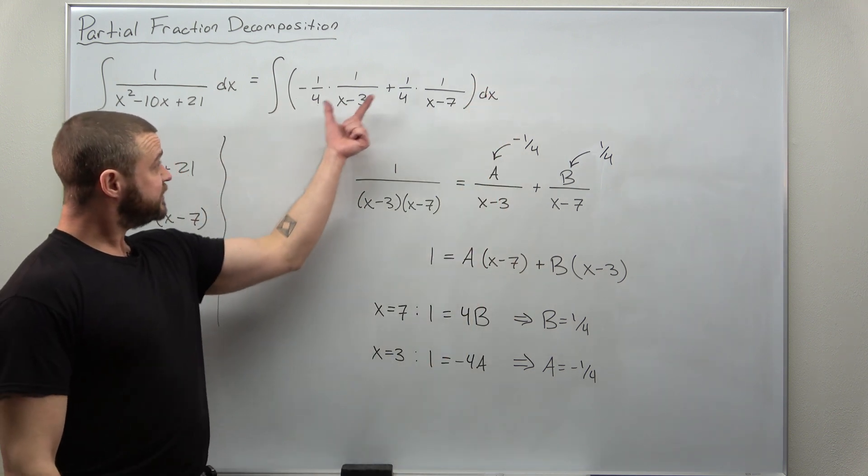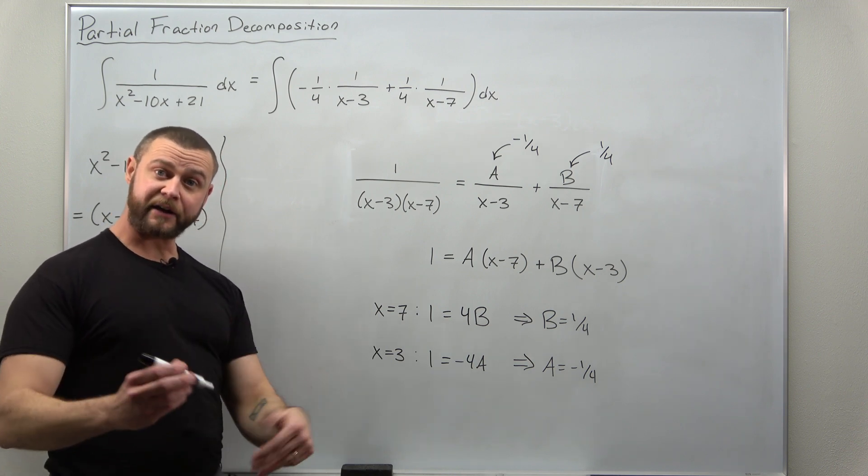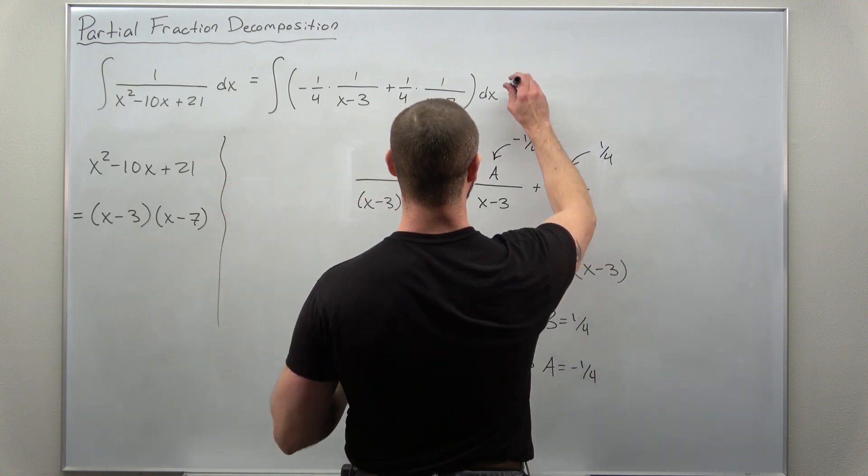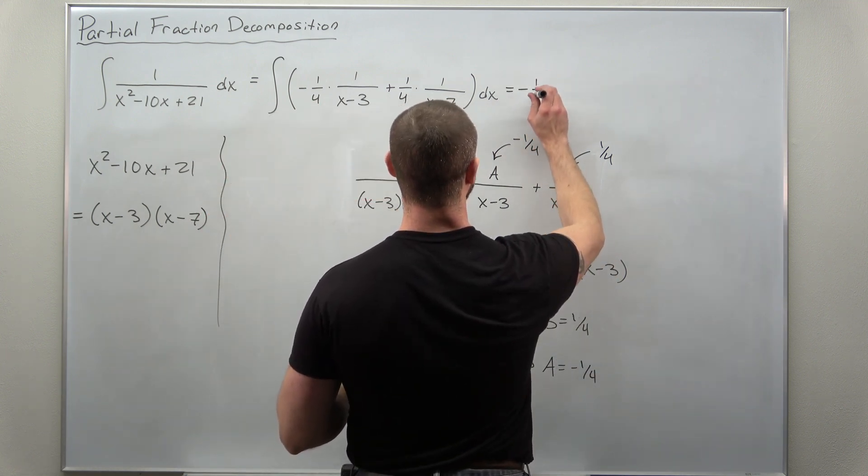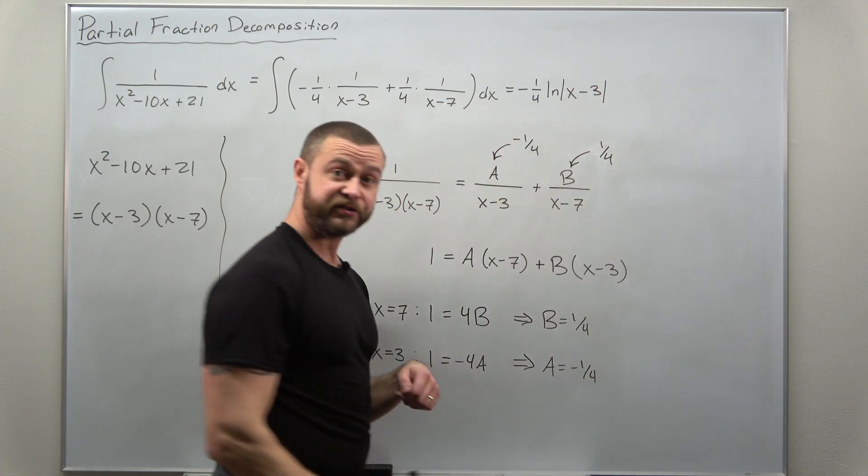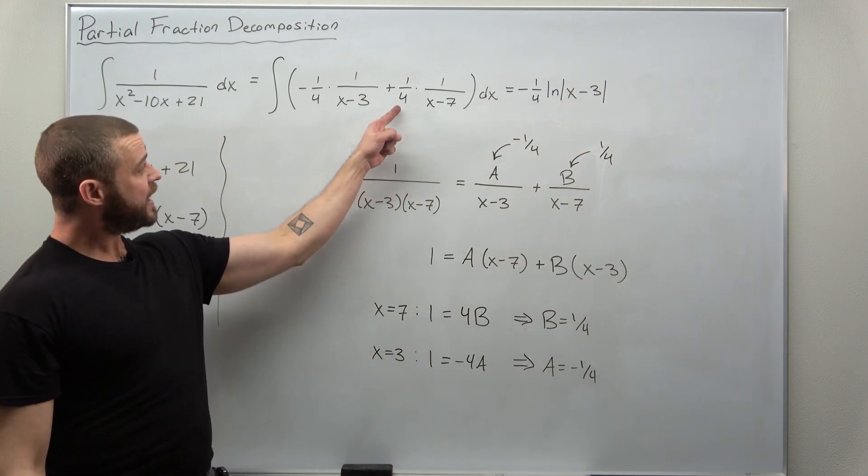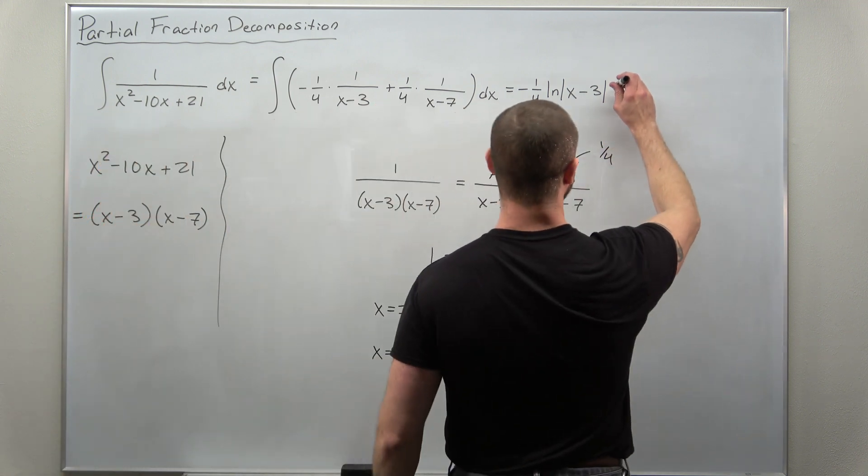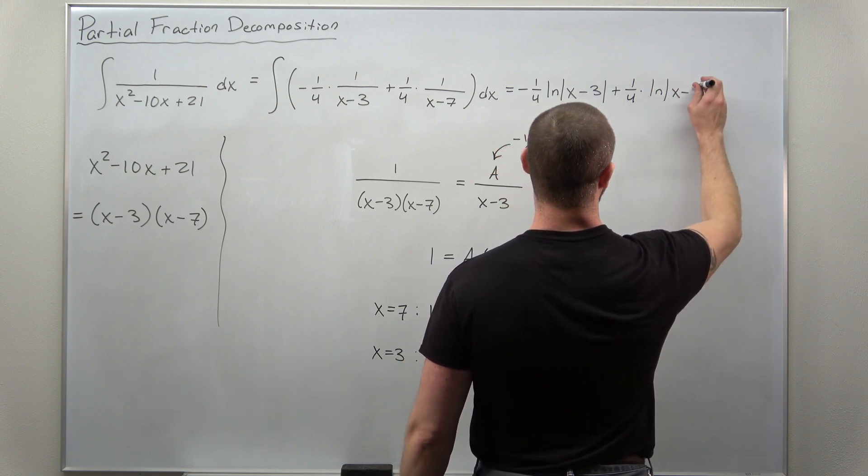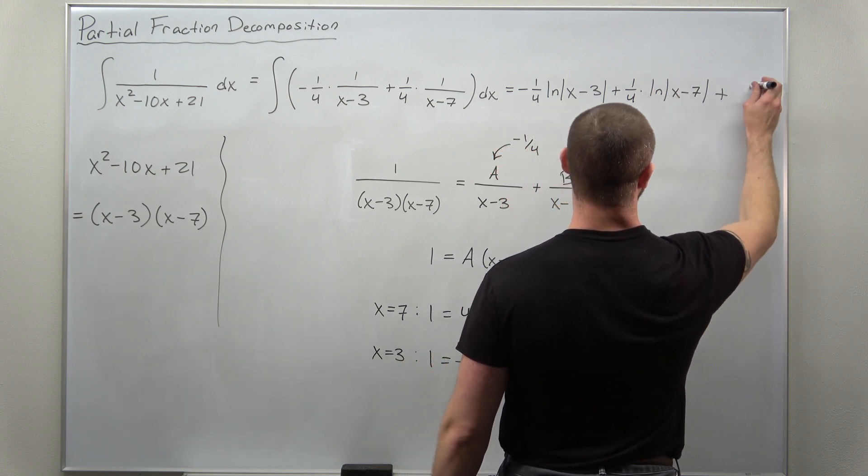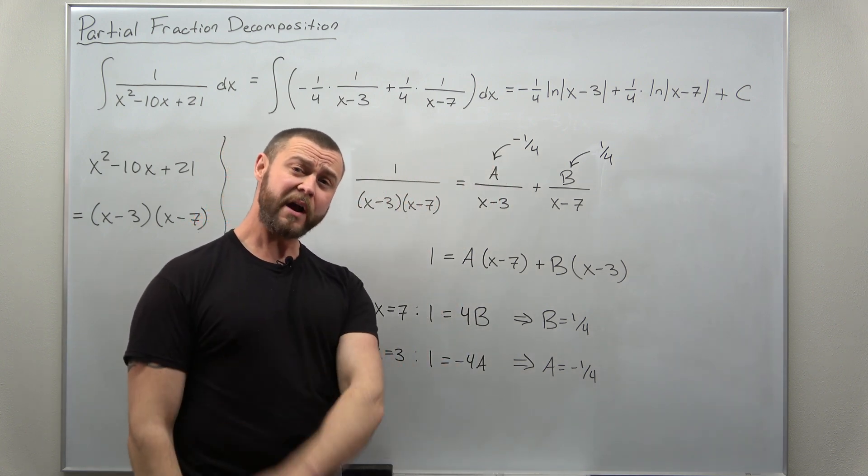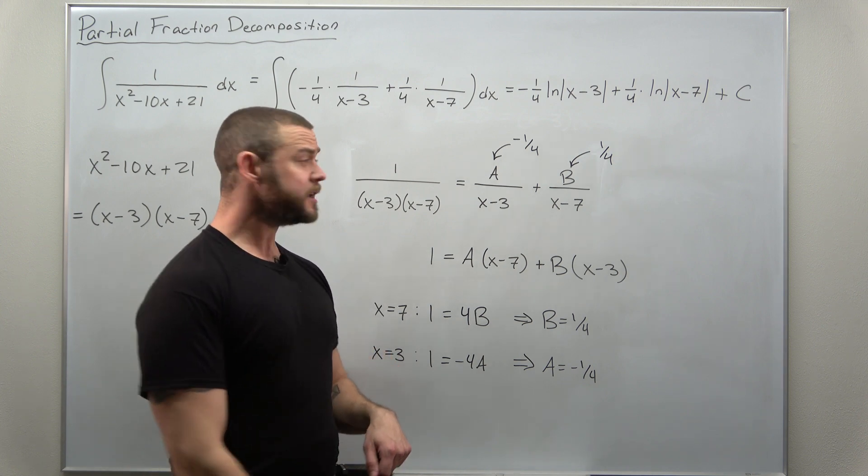And each of these terms integrates to a natural log. So let's just write down our antiderivative. We have a negative 1 fourth natural log of x minus 3, and then added to that we get a 1 fourth. And that completes our evaluation of this integral with a partial fraction decomposition.